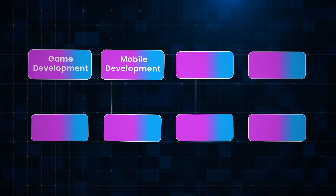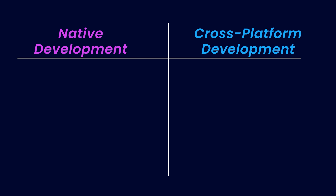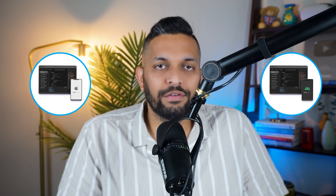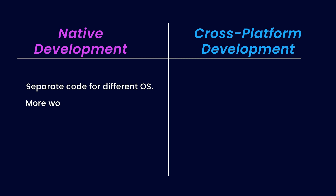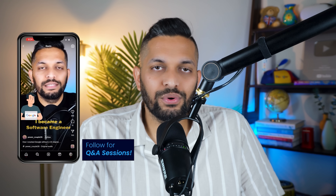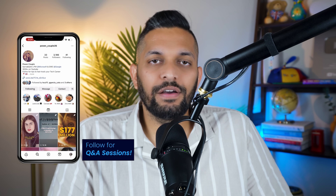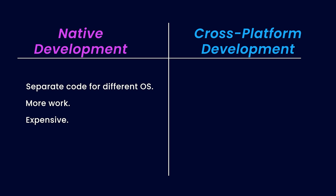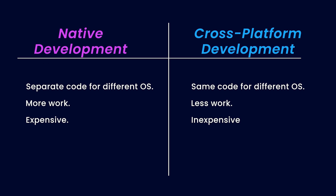Let's move on to mobile development. There are two ways of developing mobile apps: native development and cross-platform development. When you build apps for a specific operating system, it's called native mobile development — for example, Android development for Android phones and iOS development for iPhones. Developing separate apps for different platforms means more work and can be very expensive, as you'll have to hire Android developers and iOS developers. That's why we have cross-platform development, where we write code once and it works for both Android and iOS.